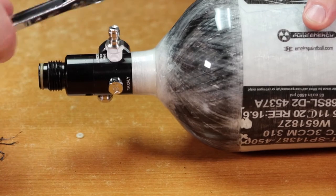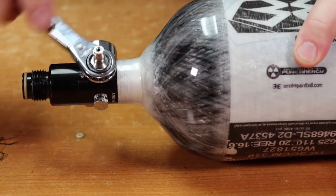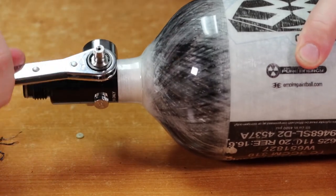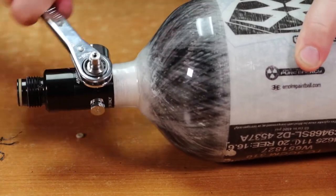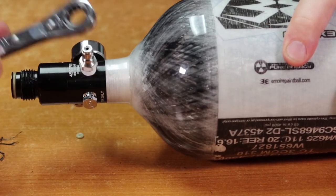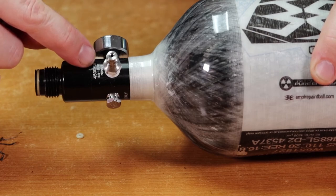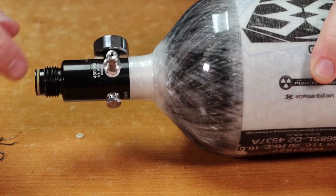Then we'll tighten it the rest of the way. Now you're not going to want to sock this down super tight. You just want to get it to the point where it's nice and snug so that it won't leak. But again, we're screwing a steel nipple into an aluminum base, so please don't strip it out.